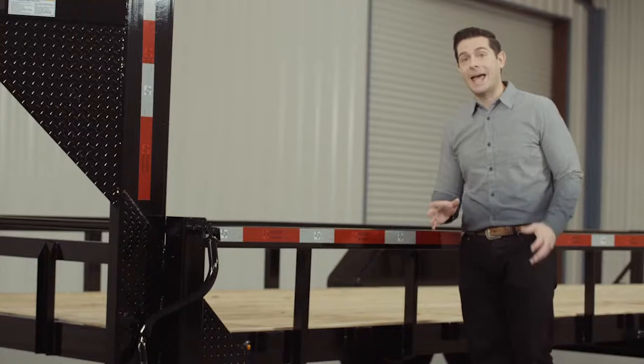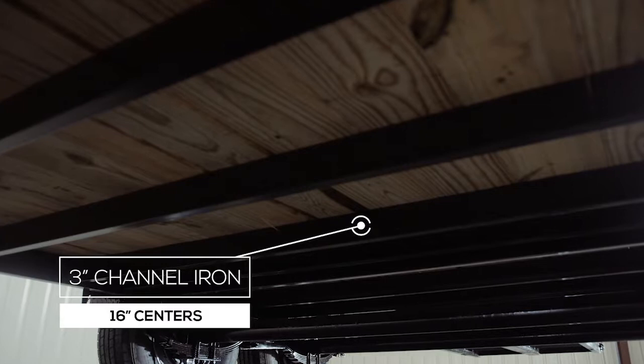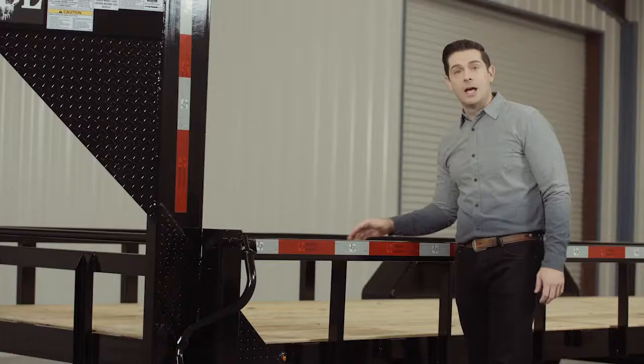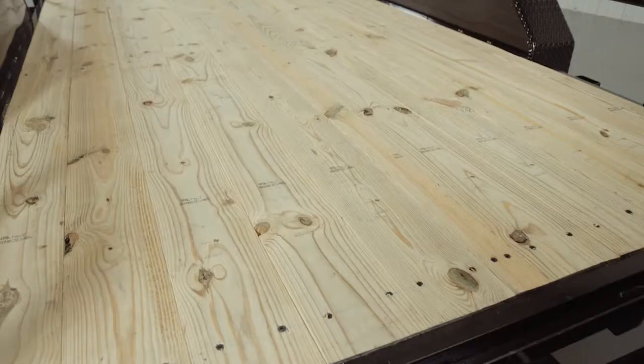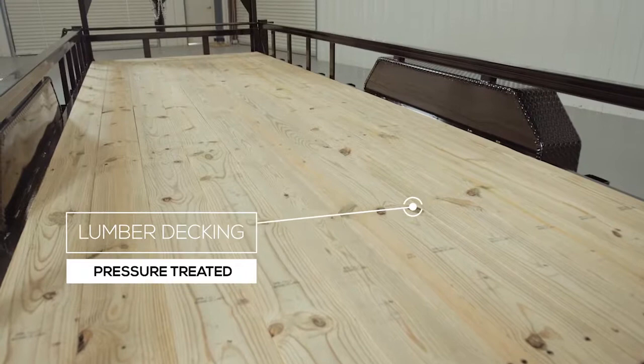The cross members are 3 inch channel iron on 16 inch centers under the deck. Some other trailers this size use angle iron for the cross members and they put them on wider spacing but we feel there should be plenty of support for varying loads. The decking on the trailer is pressure treated lumber and is fully screwed down to the frame. There's also an option for an upgrade to diamond plate flooring as well.